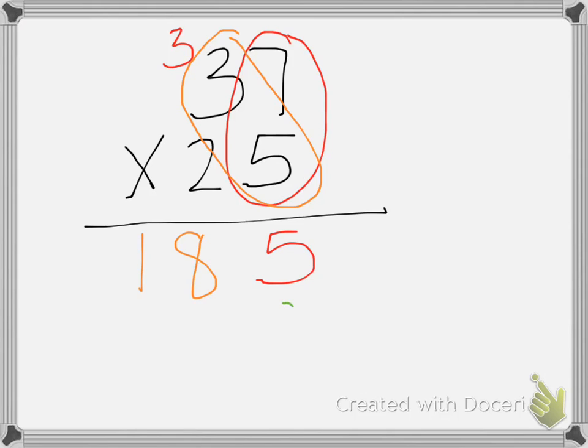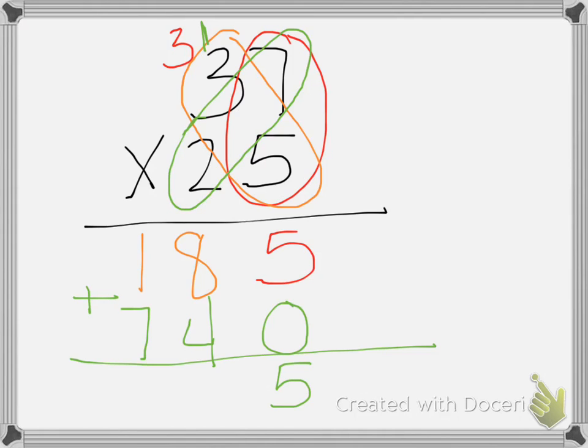Next, I have a 0 to hold my spot. 2 times 7 is 14, a 4 underneath the 8, and I carry that 1. 2 times 3 is 6, plus 1 is 7. And then I add it. 0 plus 5 is 5. 8 plus 4 is 12, carry the 1. 7 plus 1 is 8, 8 plus 1 is 9. 925.